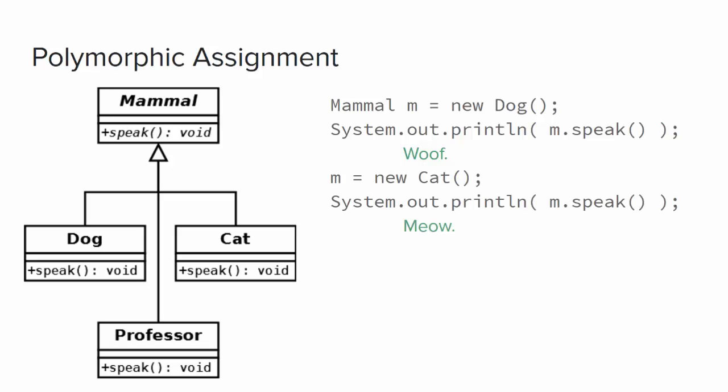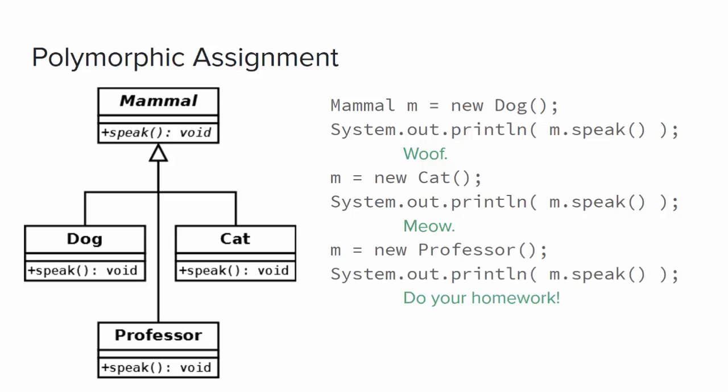Likewise, if we had assigned a Cat object to our m reference and called m.speak(), we'd get meow. And if we assign a Professor object to our Mammal reference, we might get 'do your homework.' Three different kinds of objects were stored in the same variable at different times, and the same m.speak() method was called, but it produced three different results because of late binding. The Mammal m object reference was polymorphic — it had different forms each time it was used.